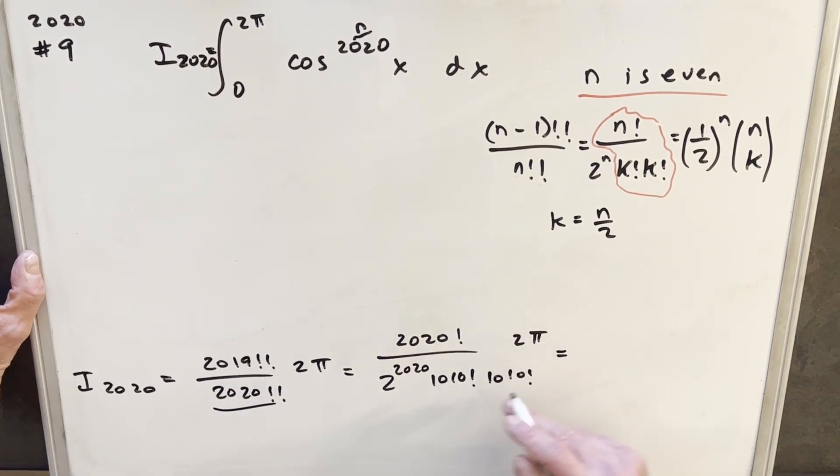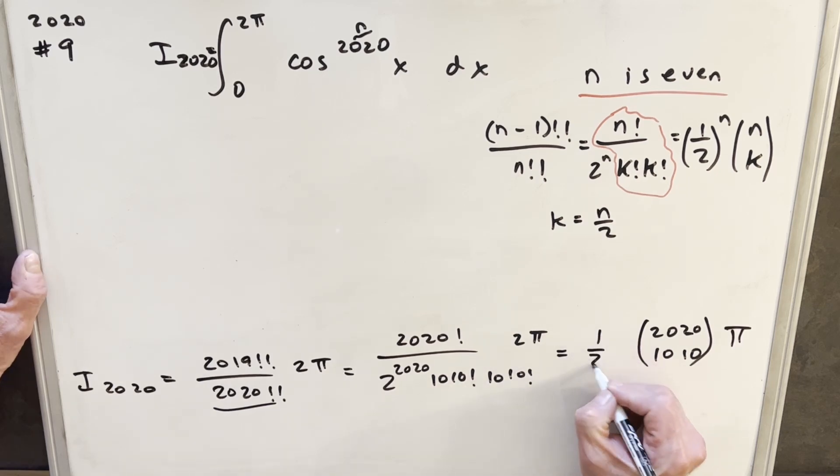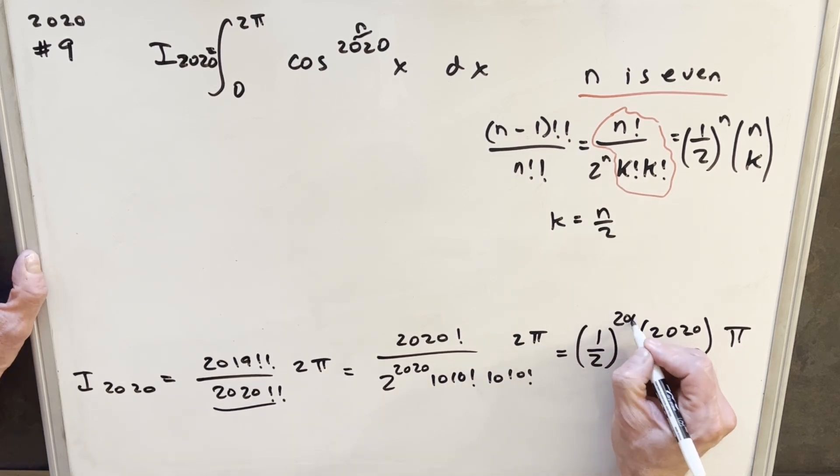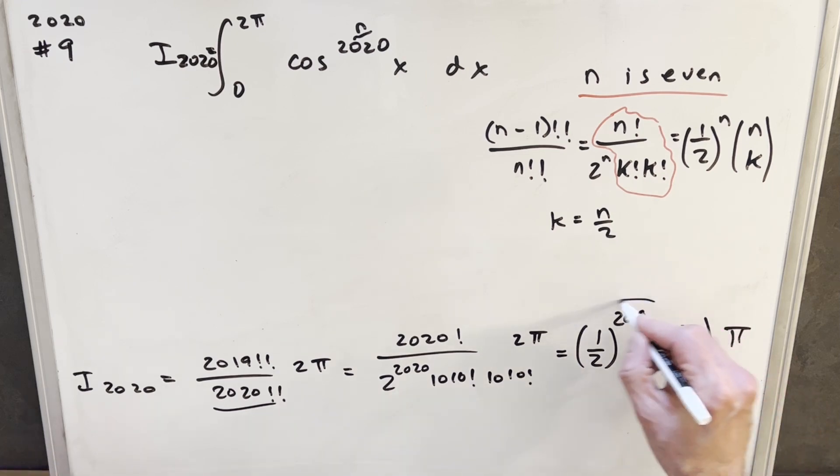And I'm just going to abbreviate this using the n choose k notation, so we're going to have this as 2020 over 1010, meaning exactly the same as this. The only thing we can do, okay, so we'll have our pi over here. We can take a 2 over 2 to the 2020, and we can write this as 1 half to the 2019, and that's it. There's the solution.